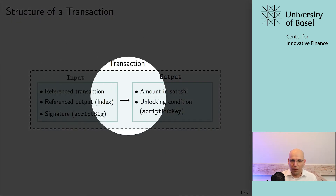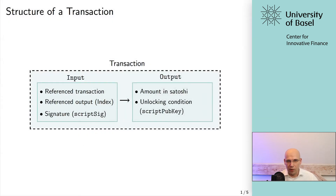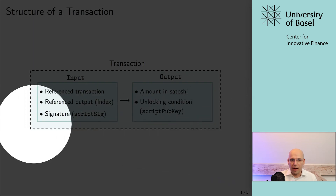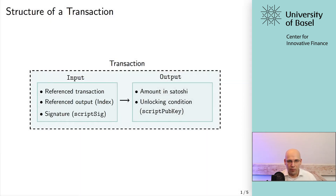For example, when we have a transaction, you have certain inputs — that's basically what you assume value-wise, what you put into the transaction — and each transaction also creates new outputs. With the outputs, you can create unspent transaction outputs with certain conditions, and these outputs can then again be referenced by later transactions. When you think of the transaction as a container of value, you're putting inputs in there, referencing outputs of earlier transactions, and then you can split these inputs into new outputs with their own conditions.